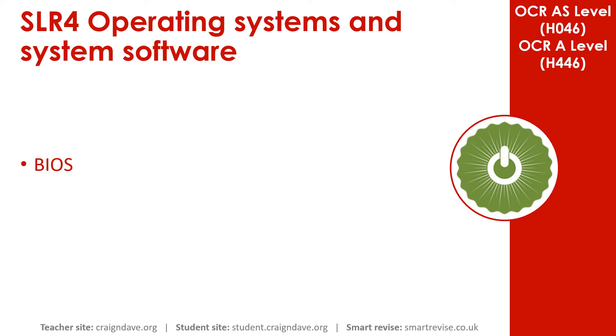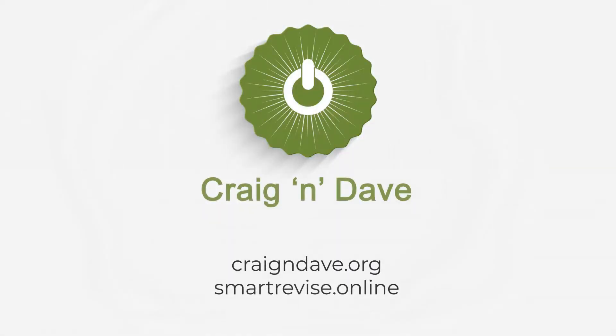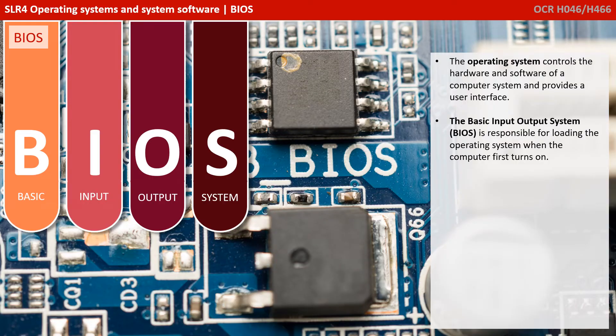In this video, we discuss the basic input-output system. What is the BIOS? It shouldn't be confused with the operating system. The operating system controls the hardware and software of a computer system and provides a user interface. Whereas the basic input and output system — the BIOS — is responsible for loading the operating system when the computer first turns on.